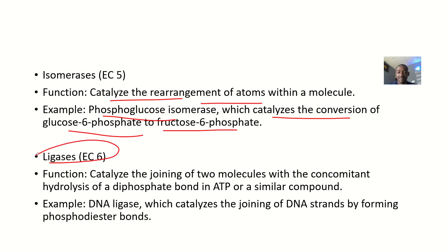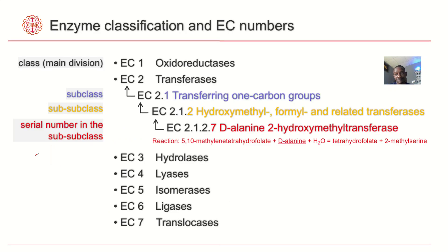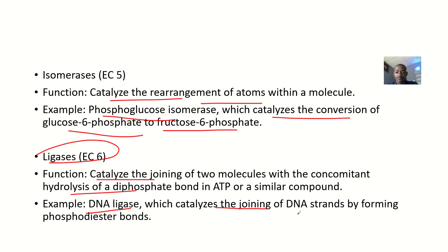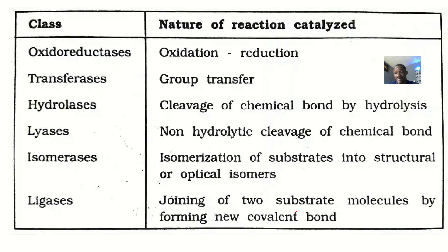Then we have ligase — that's the sixth one, the last one. The ligase function is to catalyze the joining of two molecules with the concomitant hydrolysis of a diphosphate bond in ATP or a similar compound. An example is DNA ligase, which catalyzes the joining of DNA strands by forming phosphodiester bonds. So the lyase is breakdown, while ligase is joining.